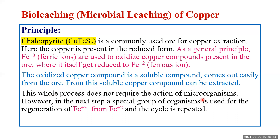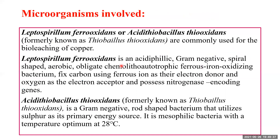This whole process of oxidizing copper does not require the action of microorganisms. From the soluble copper sulfate compound, copper can be extracted in pure form. In the next step, a special group of organisms is used to regenerate Fe³⁺ from Fe²⁺ and the two-step cycle is repeated. The first step is the oxidation of copper in its ore by ferric iron — a non-microbial step — giving copper in soluble form.